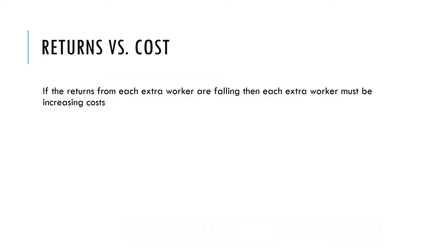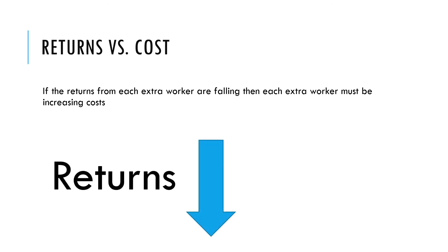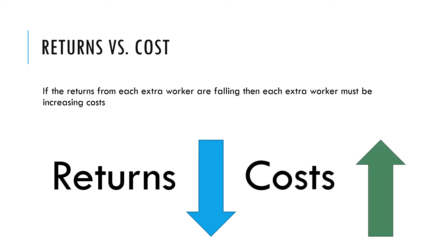So how does this link to cost? If the returns from each extra worker are falling, then each extra worker is adding less output but still costs the same — they are less cost-effective than the previous worker. If I hire an extra worker who only produces 8 more units while the previous worker produced 10, the relative cost of that extra worker is higher. So as returns decrease — as the marginal product of labor falls — costs increase, and vice versa.